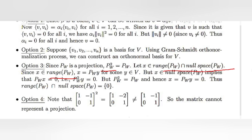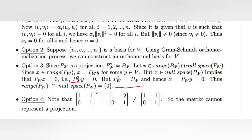For option 3: since P_W is a projection and P_W² = P_W, suppose x belongs to both the range and the null space of P_W. Since x is in the range, x = P_W(y) for some y in V. But if x is in the null space of P_W, then P_W(x) = 0, which means P_W²(y) = 0. Since P_W² = P_W, we get x = 0. Therefore, the intersection of the range of P_W and the null space of P_W equals {0}.